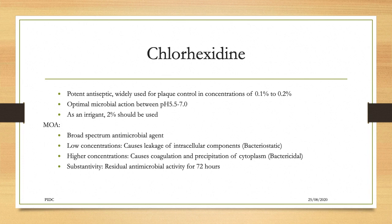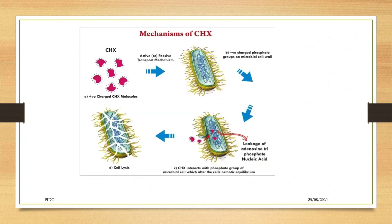Chlorhexidine is a potent antiseptic widely used for plaque control, at a concentration of 0.1% to 0.2%, with optimal antimicrobial action between pH 5 to 7, and used as an irrigation solution at 2%. Mechanism of action: it is a broad spectrum antimicrobial agent — at lower concentration it causes leakage of intracellular components making it bacteriostatic, and at higher concentration it is bactericidal. It has substantivity with residual antimicrobial activity for 72 hours. The positively charged chlorhexidine molecule attracts the negatively charged bacterial cell wall and causes leakage of intracellular components, thereby causing cell lysis.